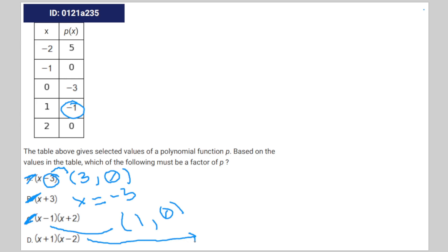Finally, with D, we do have negative 1 on the table, and it is equal to 0. And when you look at 2 as well, the y value is also equal to 0. And therefore, the answer is D.